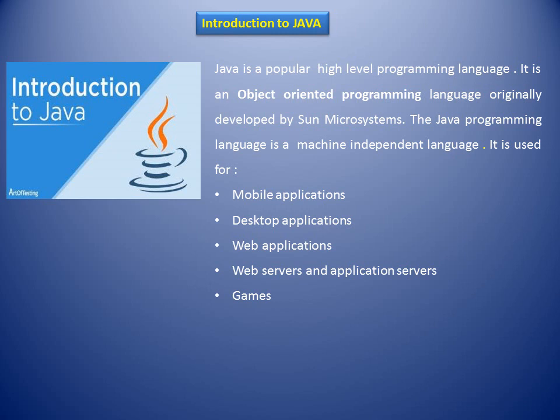Whereas a Java program can run on any operating system — whether it is Windows XP, Unix, or Linux — because of its bytecode. We will discuss bytecode in the next class. Java is used in mobile applications, especially Android apps, desktop applications, web applications, web servers, application servers, and most games are also developed in Java.